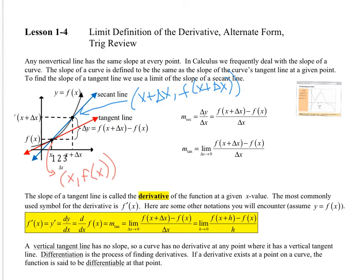Looking at the notes now, we have two points on the curve. The black piece is the curve, the red line is the tangent line, and the blue line is the secant line. One point we call x comma f of x. The other point is x plus delta x — that's the small piece of x, which represents the h from the previous picture. To find the y-coordinate, we take the x-coordinate and plug it into the function.